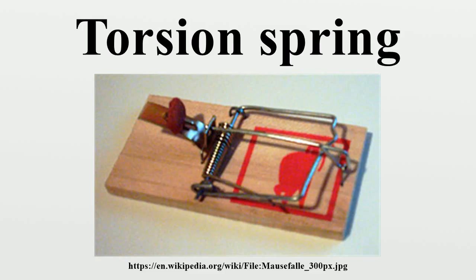The other type, a helical torsion spring, is a metal rod or wire in the shape of a helix that is subjected to twisting about the axis of the coil by sideways forces applied to its ends, twisting the coil tighter. This terminology can be confusing because in a helical torsion spring the force is acting on the wire as bending stresses, not torsional stresses.